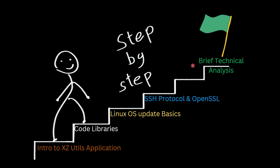Here is the plan: first, I'll introduce the XZ Utils application — what it is and why we use it on Linux. Then we'll discuss code libraries briefly, because the XZ Utils application uses a library that was compromised with a backdoor. After that, we'll cover Linux OS update basics, since this library is distributed through updates and it's important to understand how Linux systems receive updates and install applications through package managers.